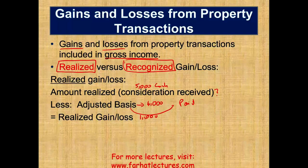This is what realized is: the amount realized minus the adjusted basis. What goes into the amount realized and what goes into the adjusted basis involves much more than this simple example, but this is just to get you going for now.